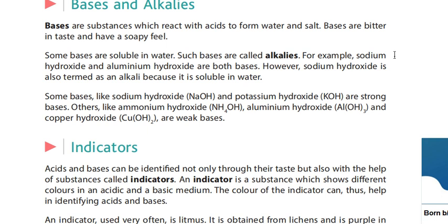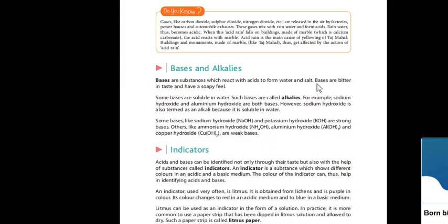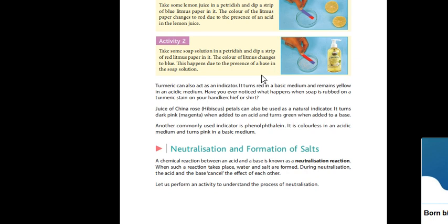What are alkalis? Some bases are soluble in water, and those are called alkalis. For example, sodium hydroxide and aluminium hydroxide are both bases. However, sodium hydroxide is also termed as an alkali because it is soluble in water. Alkalis are those bases which are soluble in water.